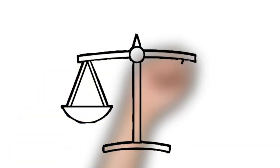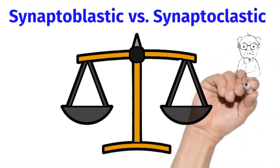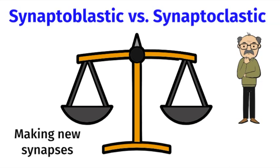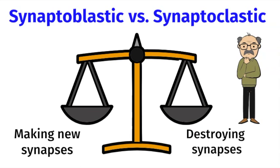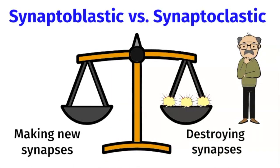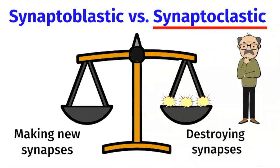The health of our brain depends on the balance between synaptoblastic and synaptoclastic changes. Synaptoblastic means making new synapses, which are those connections between neurons. The opposite is synaptoclastic, which means destroying synapses. Unfortunately, in Alzheimer's disease, the formation of the beta-amyloid plaques tips the balance in favor of synaptoclastic changes, leading to a protective downsizing of the brain.